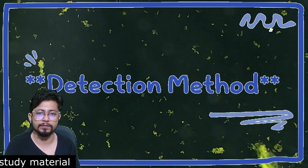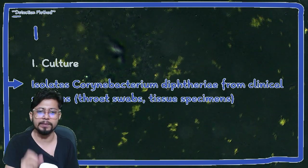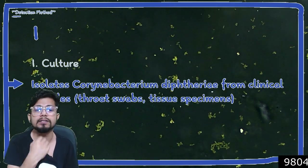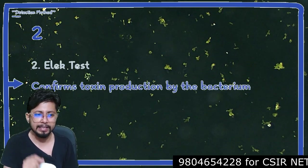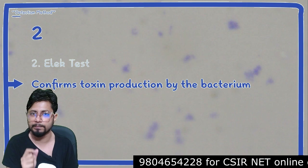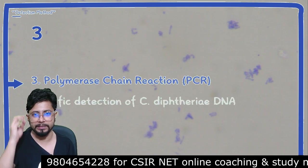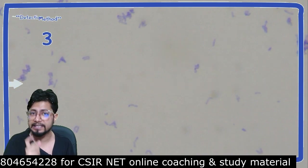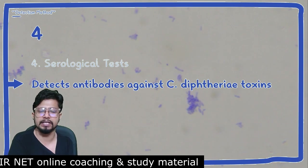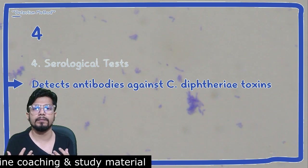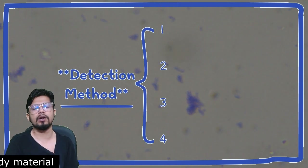There are four detection methods. First is culture, which isolates Corynebacterium diphtheriae from clinical samples, particularly throat swabs and tissue specimens. Second is the Elek test, which confirms toxin production by the bacterium. Third is polymerase chain reaction (PCR), enabling specific detection of Corynebacterium diphtheriae DNA. Fourth are serological tests, which detect antibodies produced by the host patient against Corynebacterium diphtheriae.